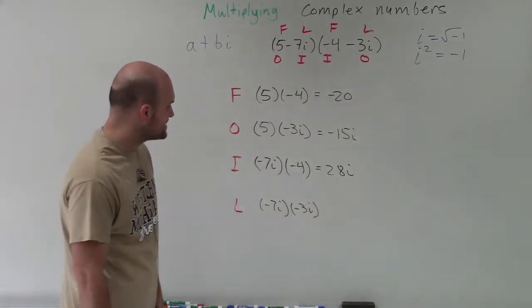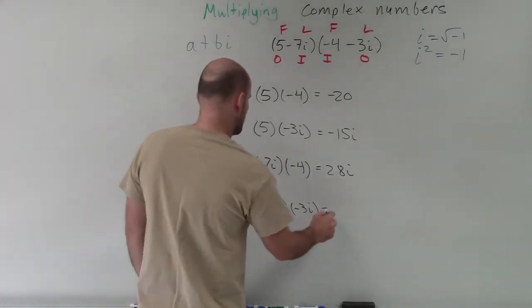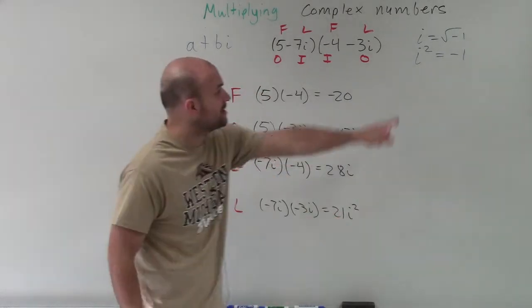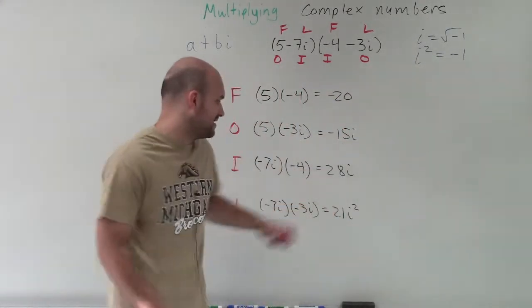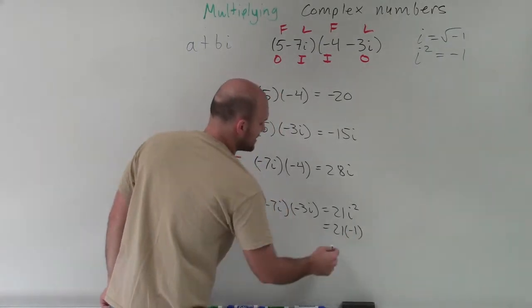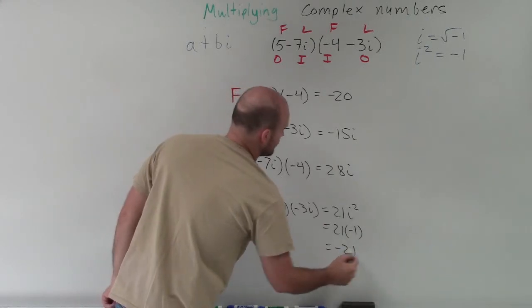Then we have negative 7i times negative 3i. That's going to give us positive 21i squared. But remember, i squared represents negative 1. So therefore, 21 times negative 1 equals negative 21.